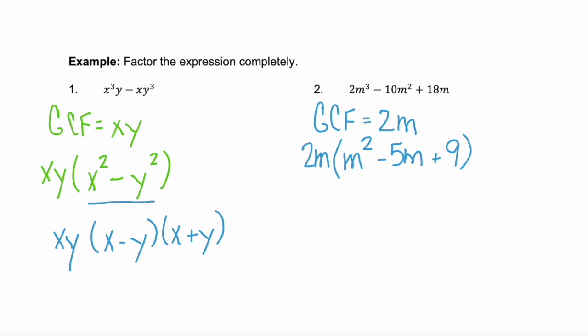Now we need to factor completely, so let's look at this trinomial that we have. Can we factor this? Well, let's see. We need two numbers, m times n, that give us 9, and at the same time, m plus n have to equal our middle term of negative 5. Well, what are the factors of 9?